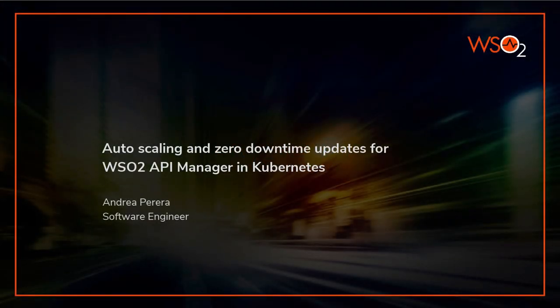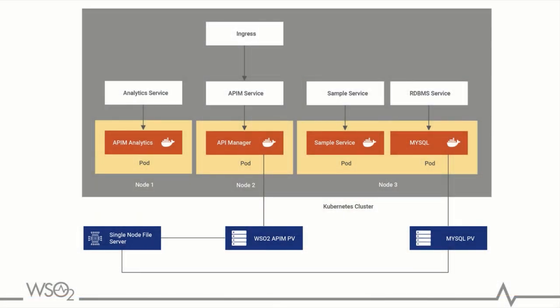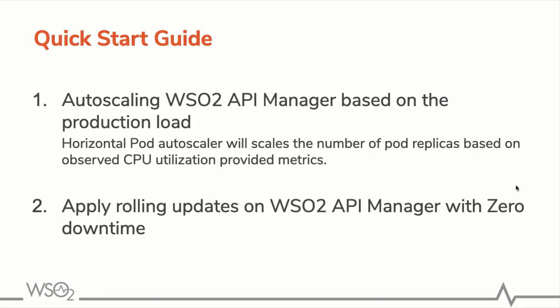Hello everyone, welcome to this demonstration on auto scaling and zero downtime updates for API Manager in Kubernetes. In the previous demonstration we looked at how to deploy WSO2 API Manager in Kubernetes. This will be the outline for the demo: first we're going to look at how to auto scale WSO2 API Manager based on the production load using Horizontal Pod Autoscaler, and second we're going to see how to apply rolling updates on WSO2 API Manager with zero downtime.